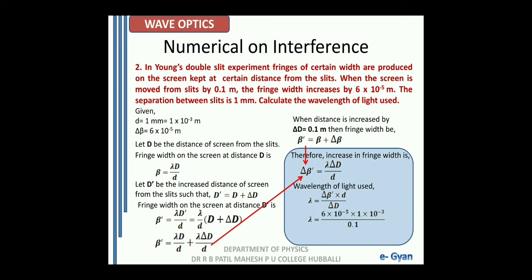The wavelength is lambda = Δbeta × d / ΔD = (6 × 10⁻⁵ × 1 × 10⁻³) / 0.1. On calculation we get lambda = 6 × 10⁻⁷ meters, which is equal to 6000 angstrom.